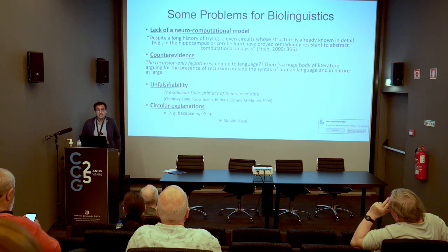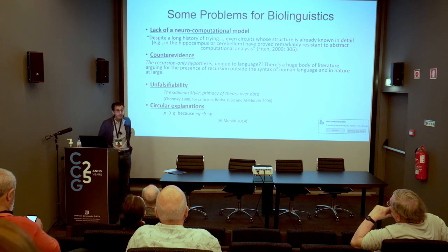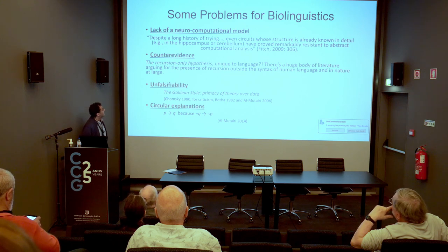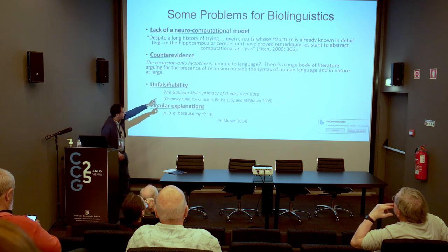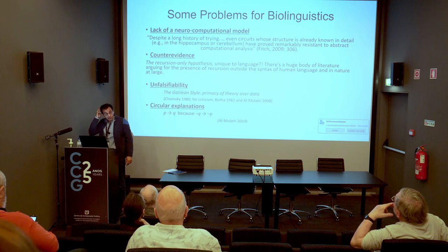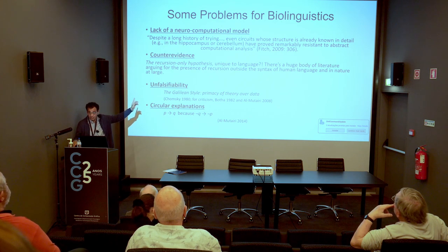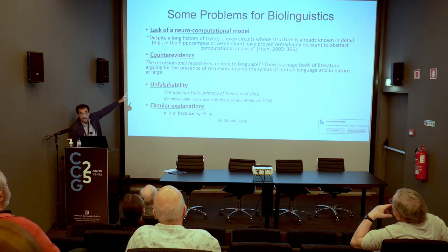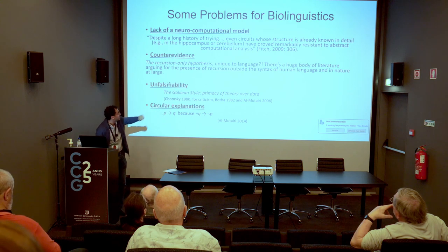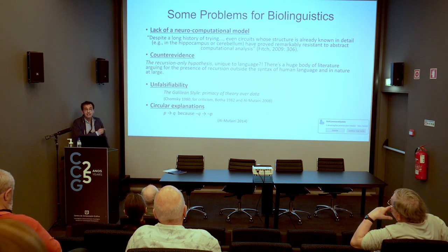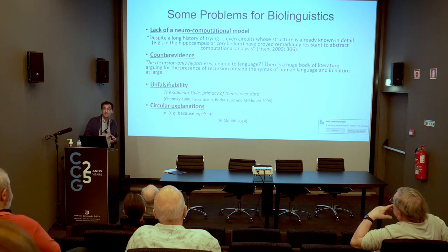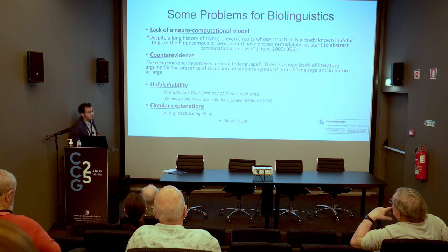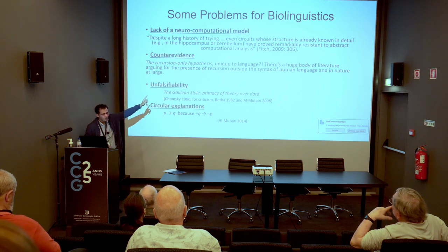Now, problems with biolinguistics as I and others see them. First: lack of a neurocomputational model. Fitch — who was co-author of the 2002 paper with Chomsky — says: 'Despite a long history of trying, even circuits whose structure is already known in detail have proved remarkably resistant to abstract computational analysis.' So even at this end, it's really hard to find a model that connects language with the brain computationally.